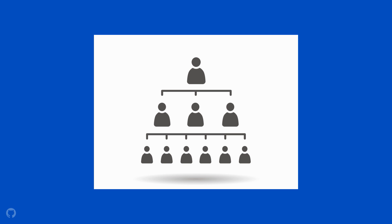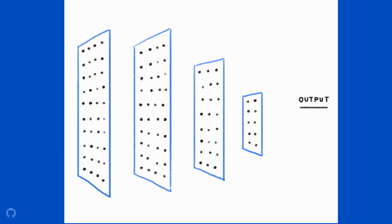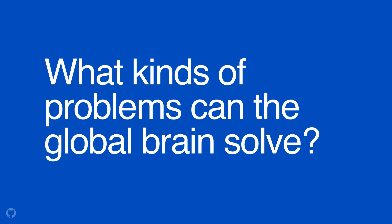It would look like something we're all very familiar with: the company hierarchy, like an organizational hierarchy. At the top there's someone like a CEO, and in the next layer down are people that support them — maybe a CFO, a chief marketing officer, and so on. You get your middle managers and it basically looks like this. If you turn it around, you see that it really looks like a deep learning network. So what kinds of problems can this global brain solve?